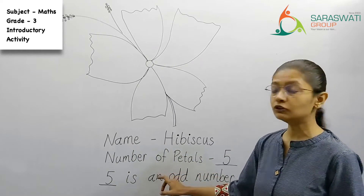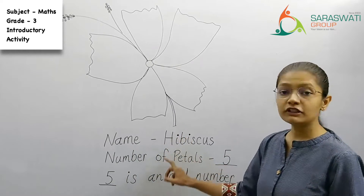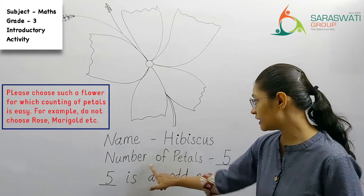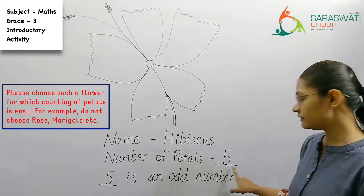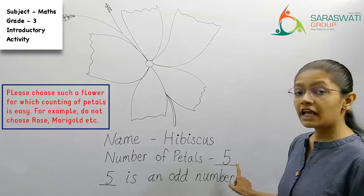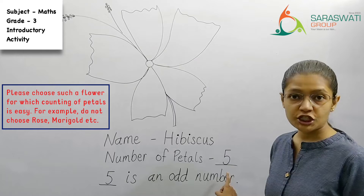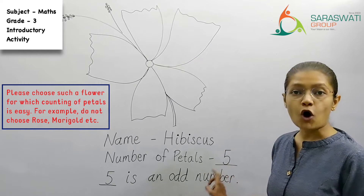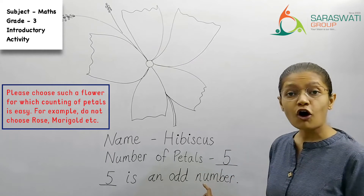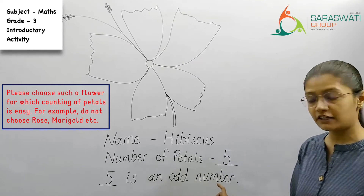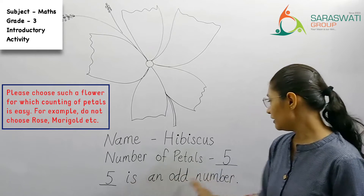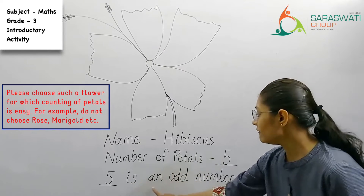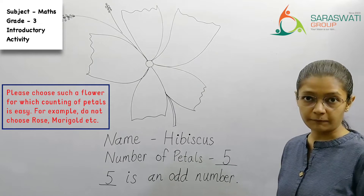Then you have to write down the number of petals in this flower. So number of petals: 5. Then you have to mention whether the number is an odd number or an even number. Over here it is mentioned: 5 is an odd number.